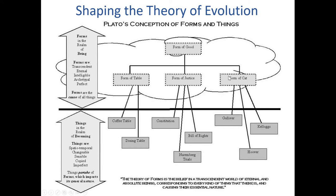The physical things actually exist in the realm of becoming. So things are changeable, sensible, copied, and imperfect versions of these forms, which are transcendent, eternal, intelligible, archetypal, and perfect. Plato thought the forms are actually the cause of all things, whereas the things themselves are just imperfect copies of the forms.